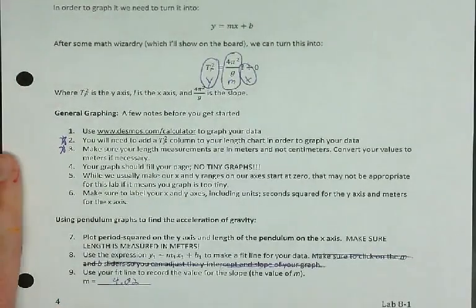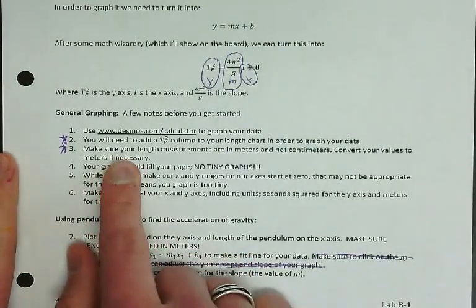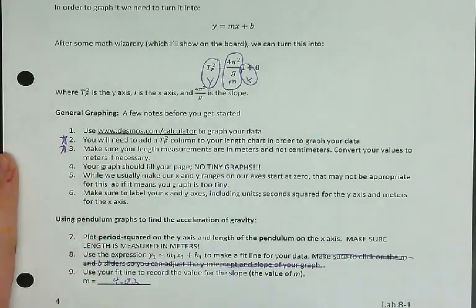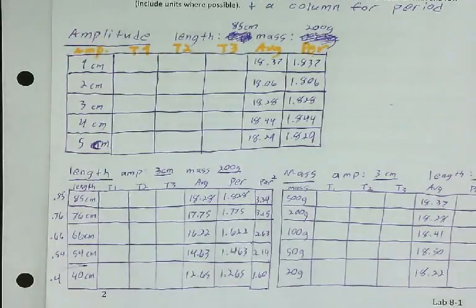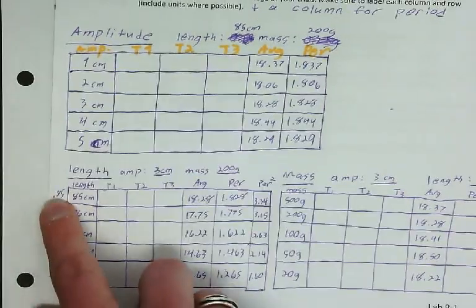You're just going to square your periods and add a period squared column. The other thing you need to do is make sure your length is in meters and not centimeters. I went over to my length one. It was in centimeters, so I turned it into meters. I divided by 100.